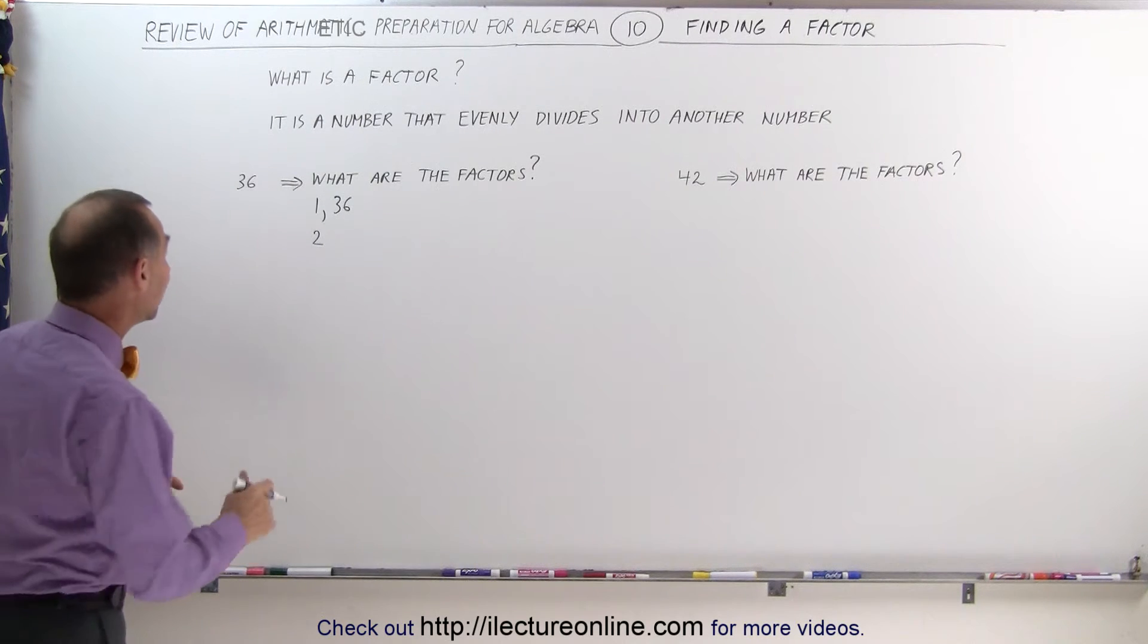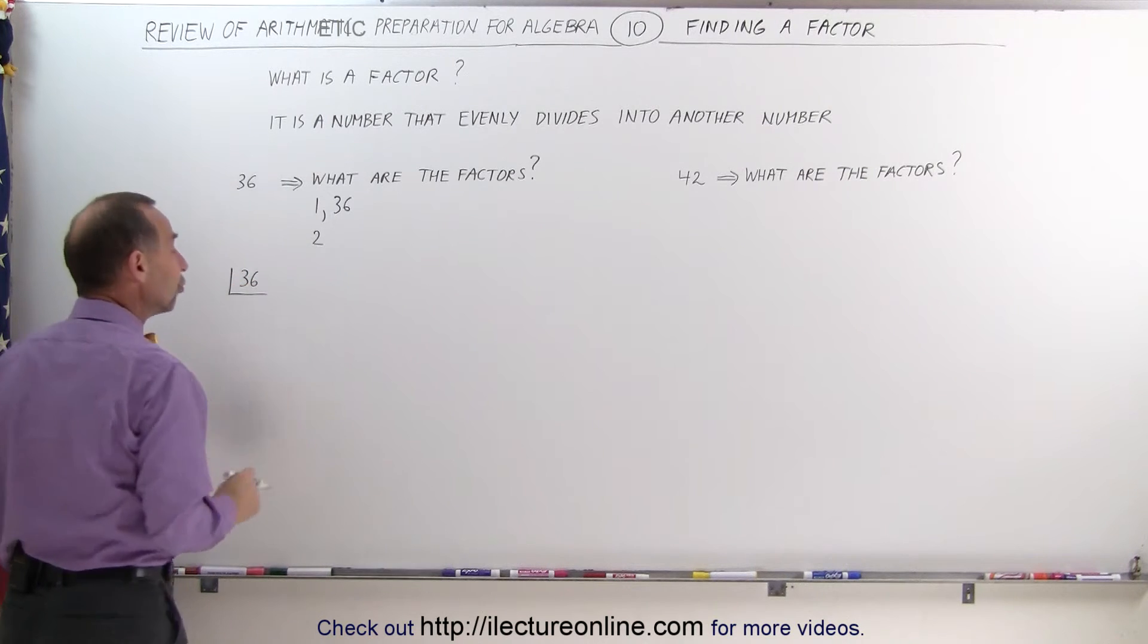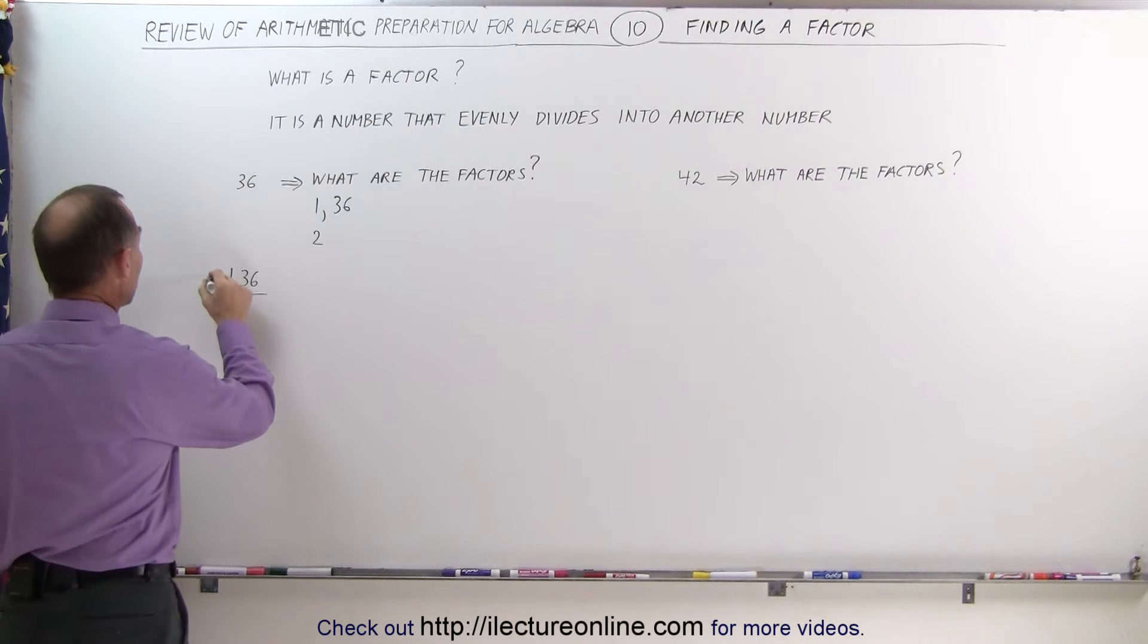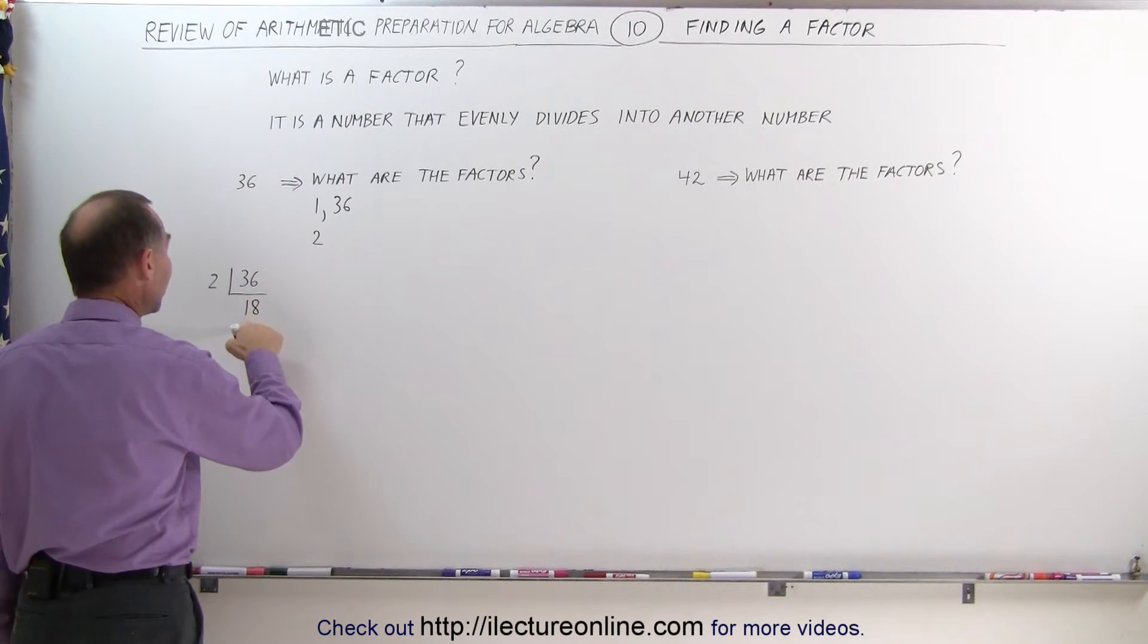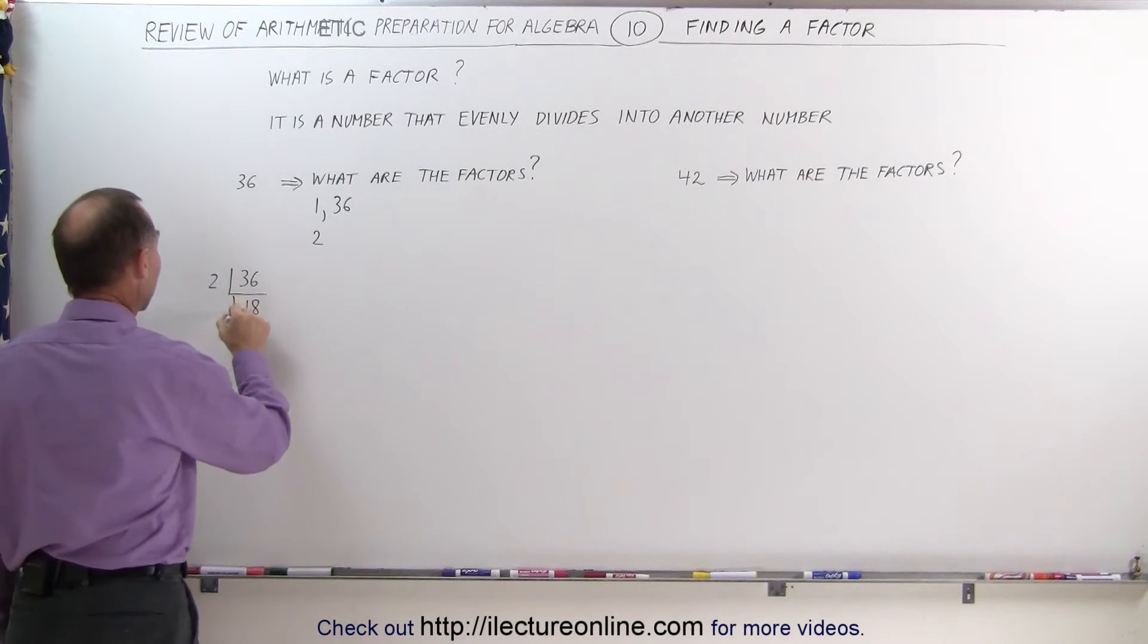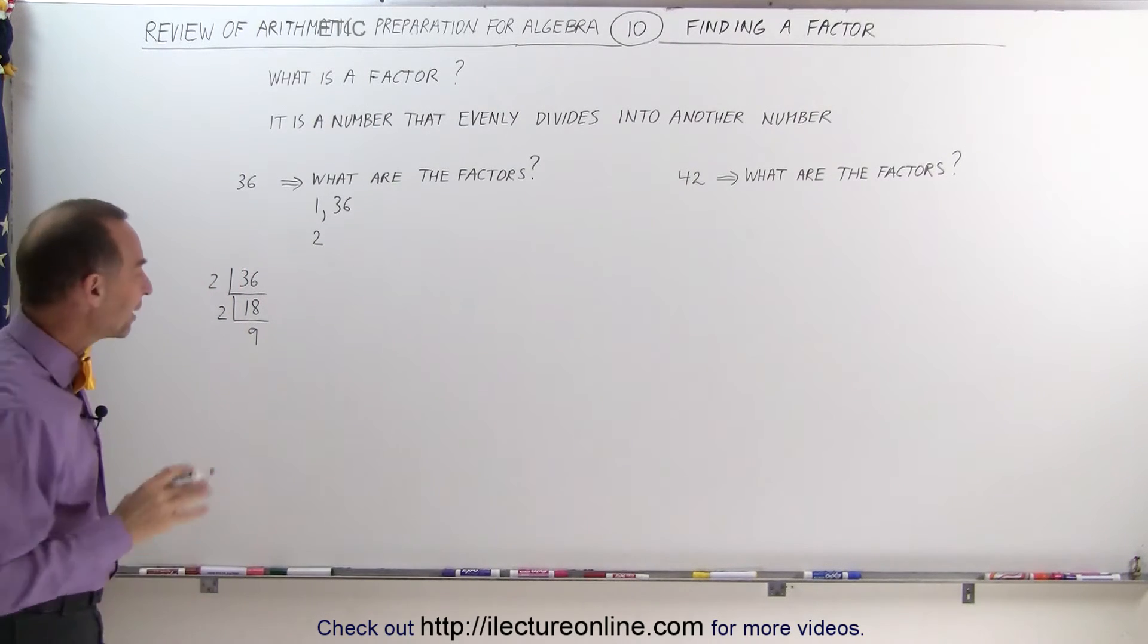The best way to do that is to start with the number 36 and divide it by the smallest prime number, which is 2. When we do that, we get 36 divided by 2, which is 18. Since it's still even, we can continue to divide it by 2. 18 divided by 2 gives us 9. Now 9 is no longer even, so we can no longer divide it by 2.